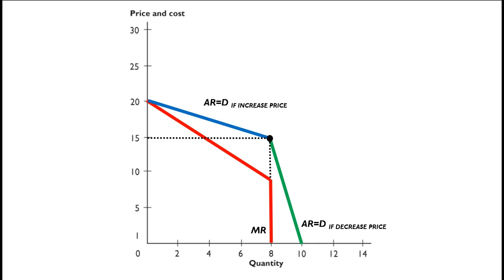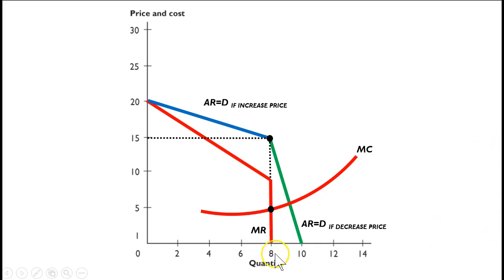We want our firm to be rational, so it's going to use the equi-marginal principle to choose how much output to produce. The marginal cost curve intersects marginal revenue where they are equal — at the output level of eight units. The firm will charge the highest price it can get for its eight units, which is $15.